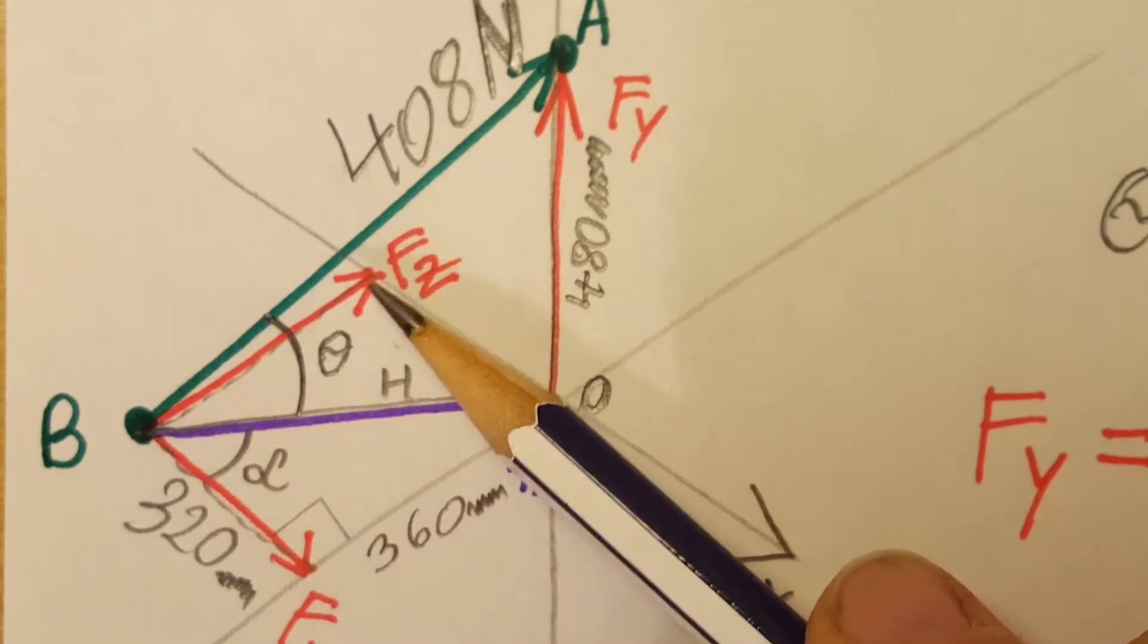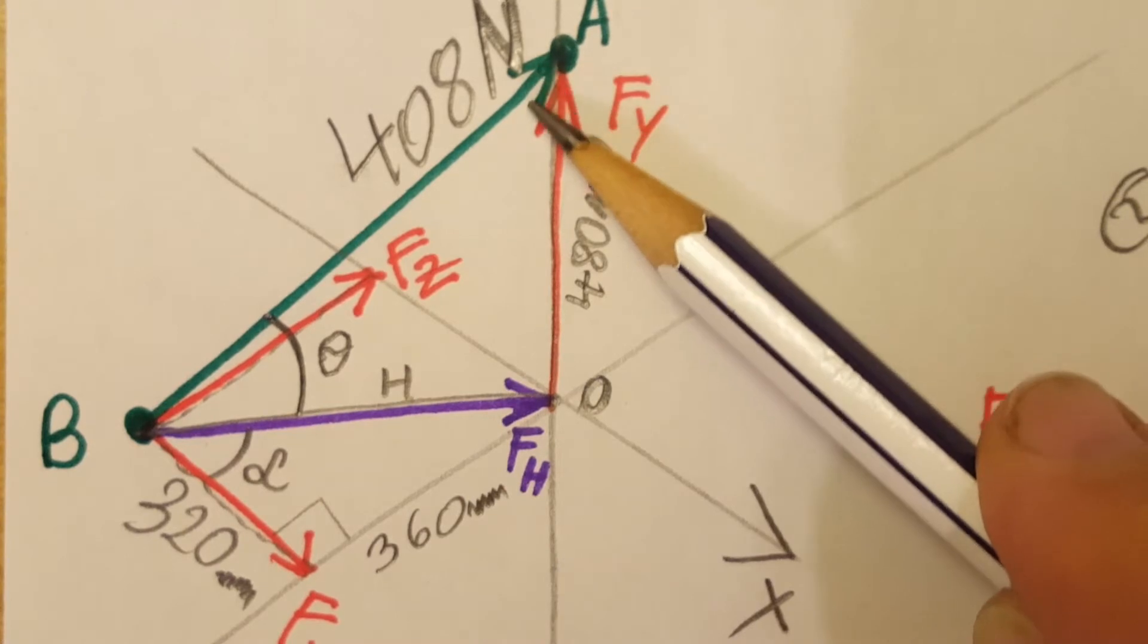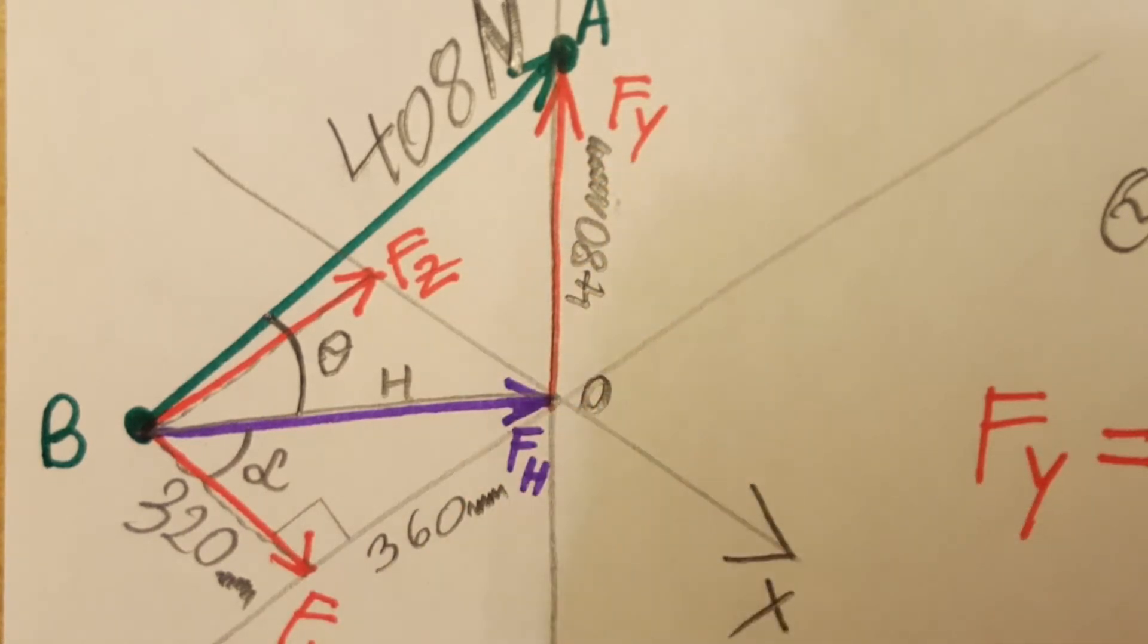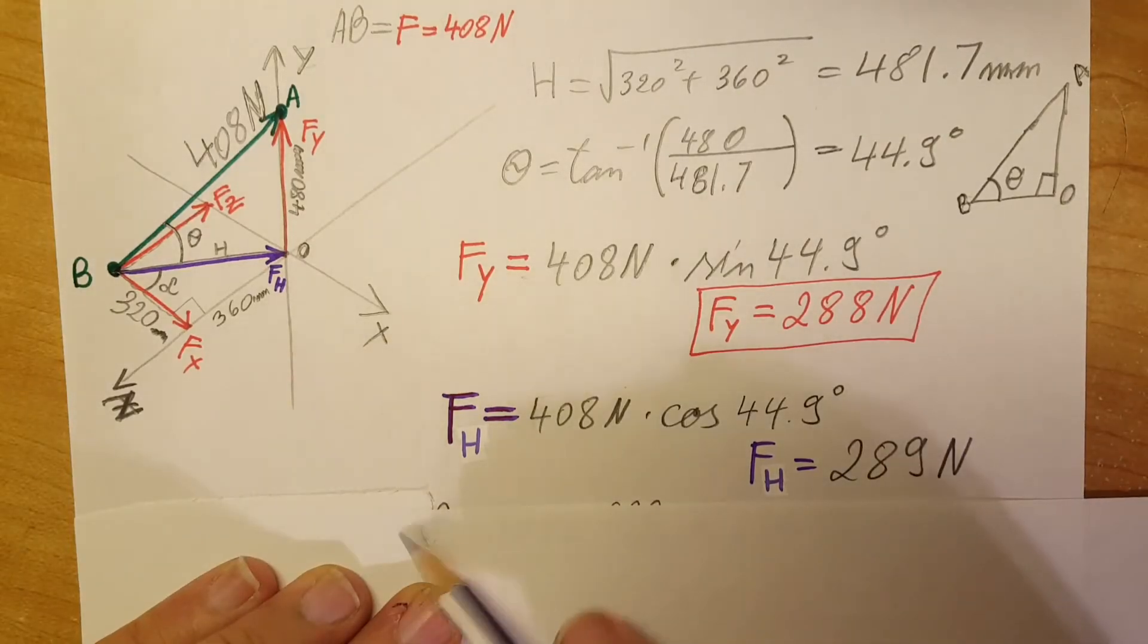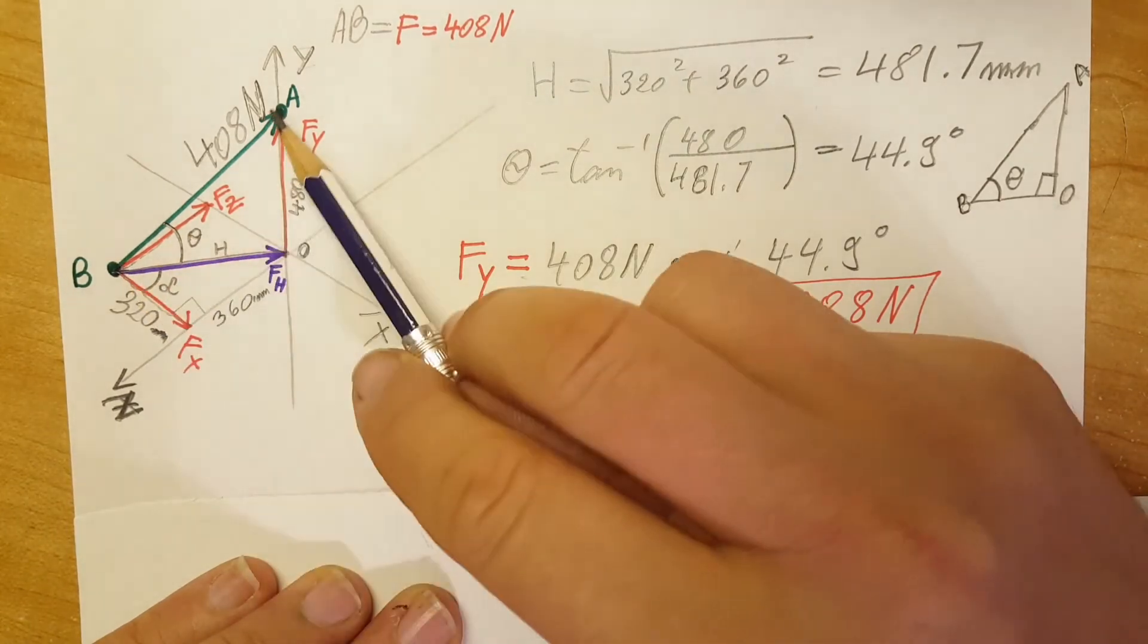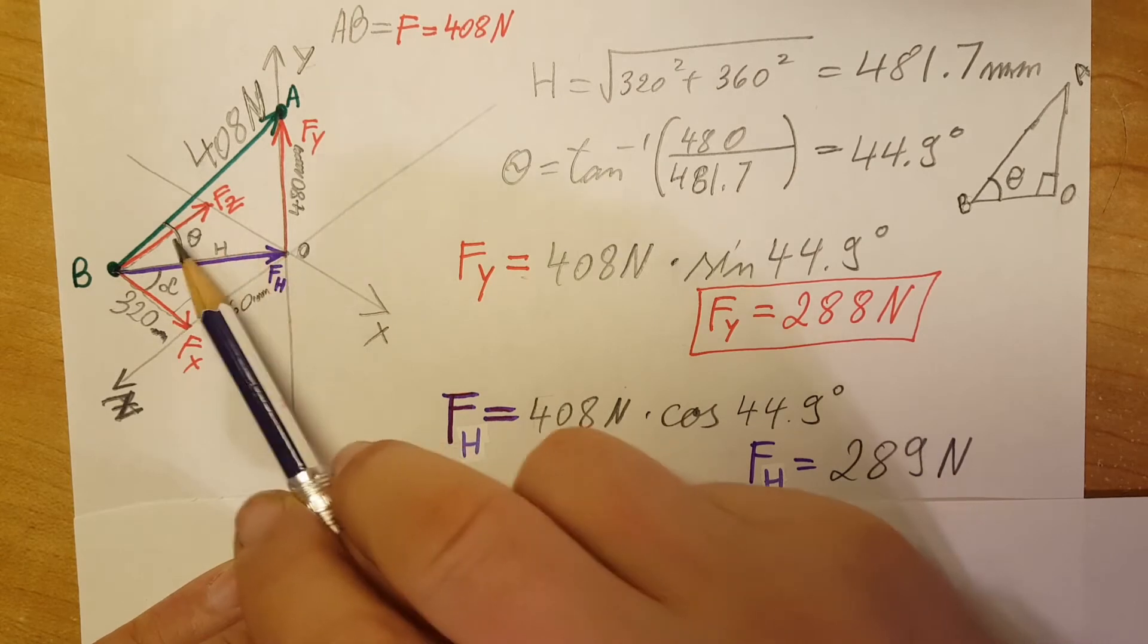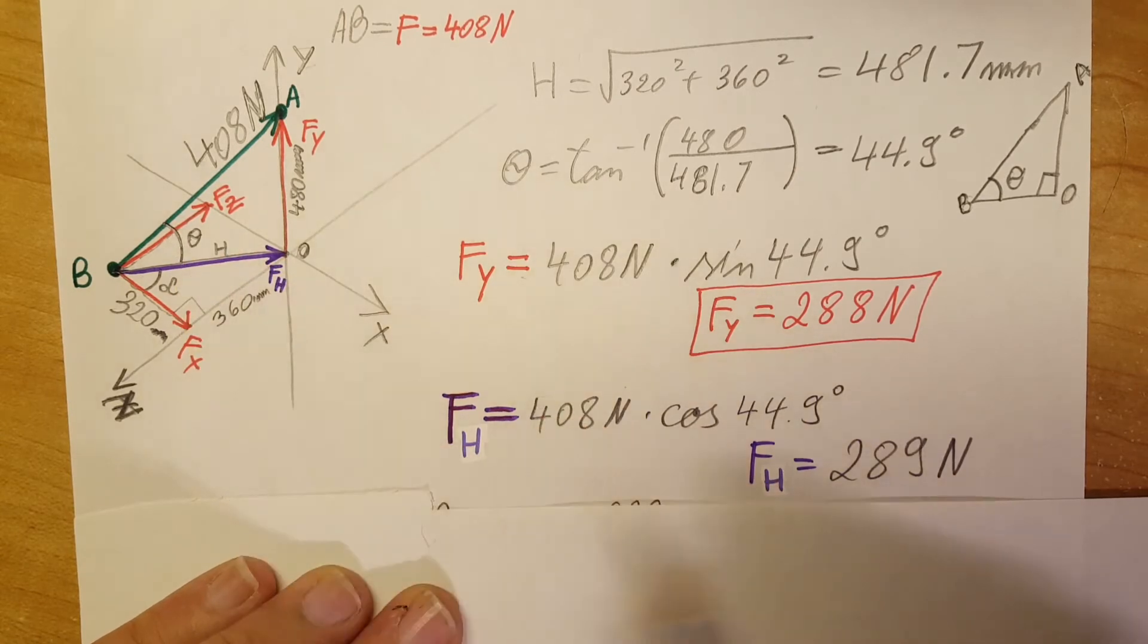Now, in order to be able to find FZ and FX, first we need to take our force and drop it down into the XZ plane. So we're going to find FH, F horizontal, this one right here. For this we're going to take 408 newtons, the tension in our AB, 408 times the cosine of this angle theta, which is 44.9.